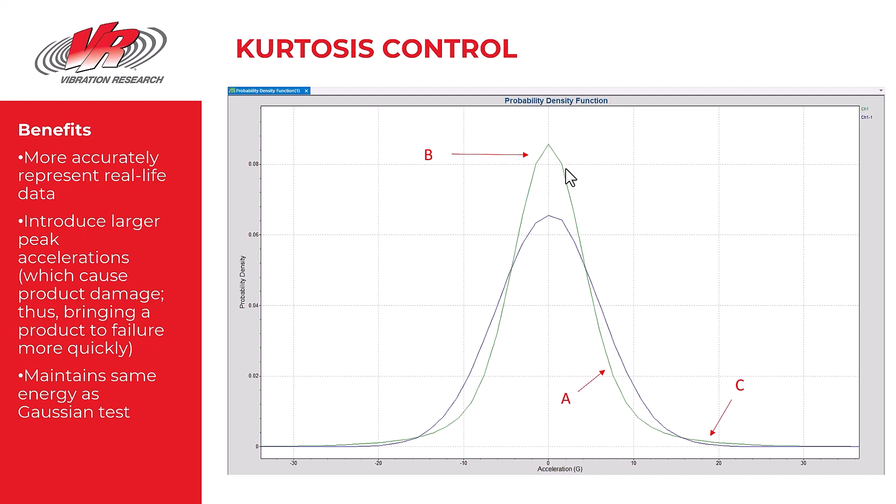So when you change kurtosis, you change in simple terms the shape of our Gaussian curve. And the goal generally is to introduce larger peaks by extending these tails.